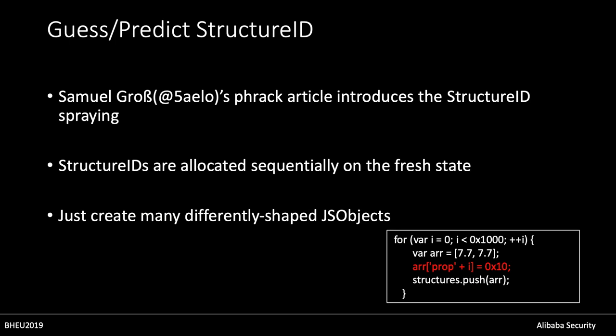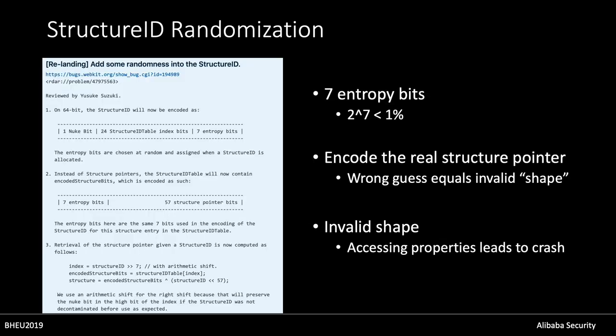In 2016, Samuel introduced the structure ID spraying technique which can predict the structure ID — it's based on the fact that structure IDs can be allocated sequentially on a fresh state in the rendering process. So creating many different shape objects can predict the structure ID. Now, the structure ID is added with seven random bits, and the structure pointer is also added the same bits. Without knowing the random bits, a guessed ID just equals an invalid shape. That means accessing properties or calling methods of the JS object will cause a crash.